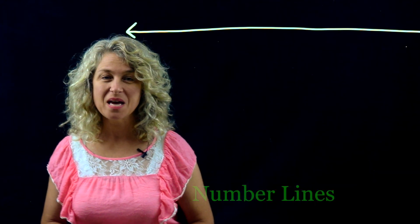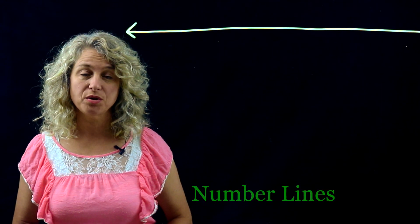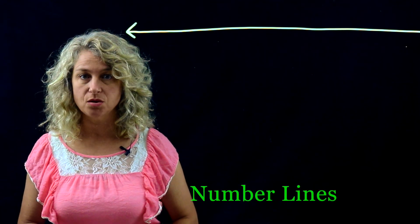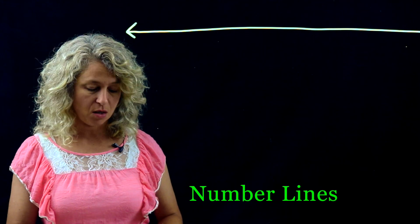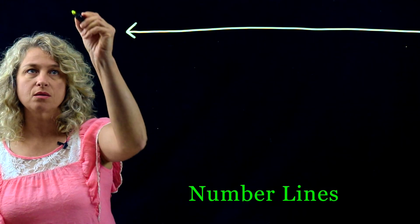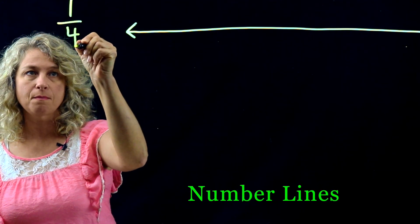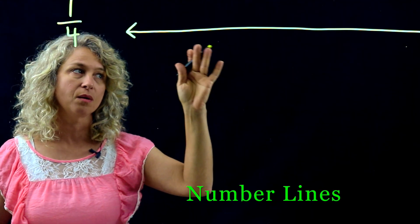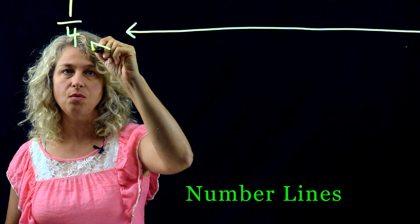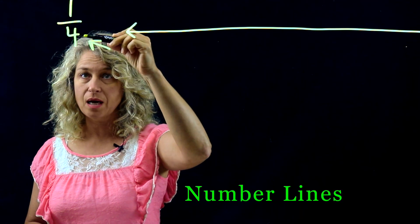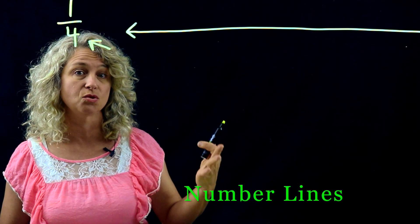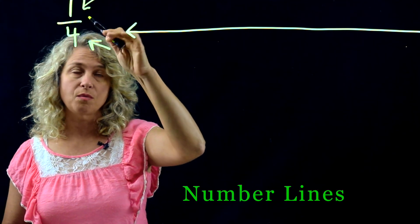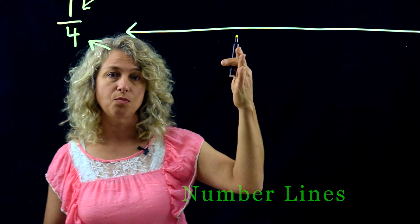Hello, today we're going to work on some number line basics — fundamental things you need to know. If we wanted to put 1/4 on the number line, we draw a number line. The denominator determines how many equal spaces you will have, and the numerator will determine how many spaces over you'll place that point.